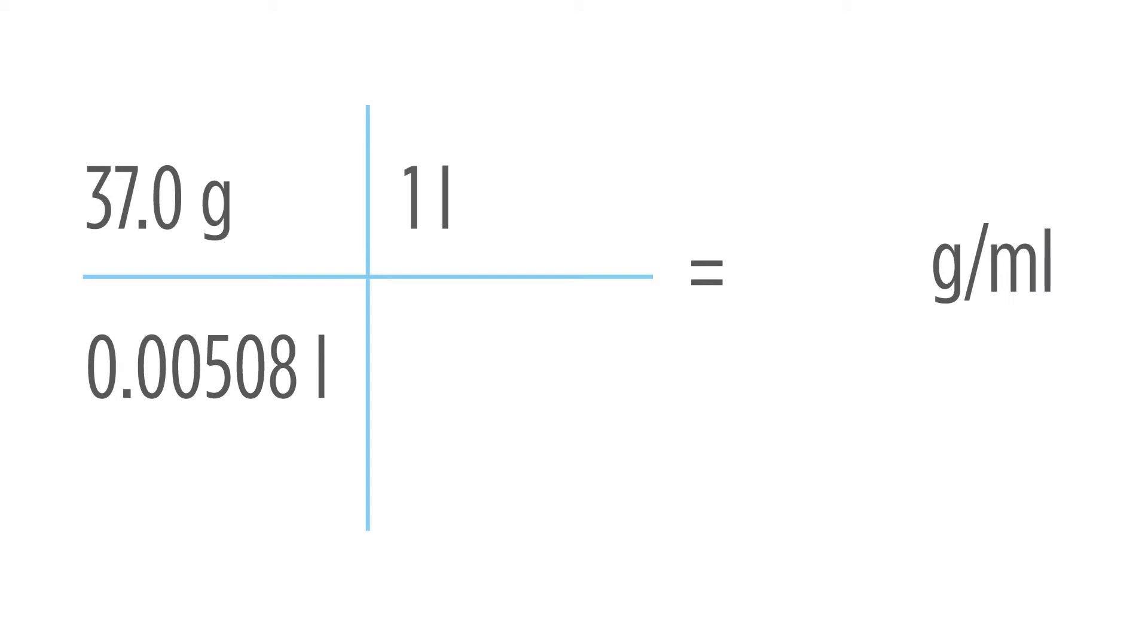For that, we know that one liter is equal to 1,000 milliliters. If we do the calculation on this, we'll come up with a number of 7.2834 grams per milliliter.